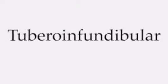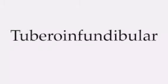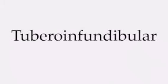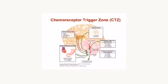The second cell group is nigrostriatal, and the action for this is motor side effects. The third cell group is the tuberoinfundibular, and the action for this is stimulation of prolactin release and spontaneous flow of milk from the breast, or what we call galactorrhea. The fourth cell group is the chemoreceptor trigger zone, and the action for this is the antiemetic effect.